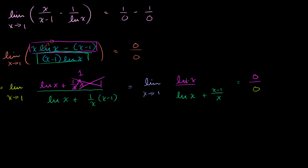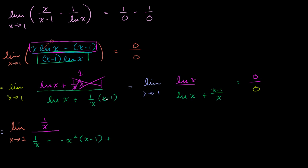We need to apply L'Hôpital's rule a second time. The derivative of the numerator ln(x) is 1 over x. For the denominator, the derivative of ln(x) is 1 over x, plus the derivative of x minus 1 over x — treating it as x to the negative 1 times x minus 1 using the product rule — gives negative x to the negative 2 times x minus 1, plus 1 over x.